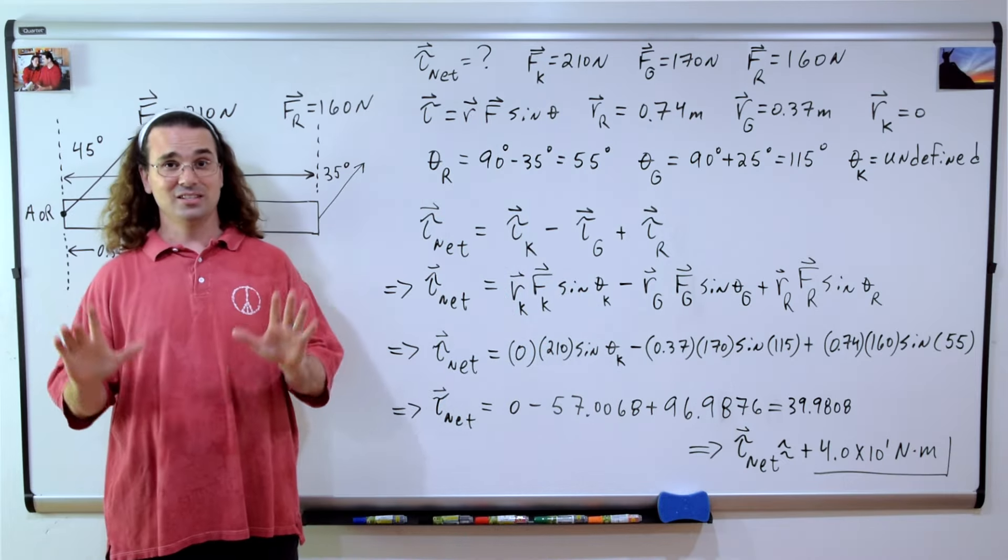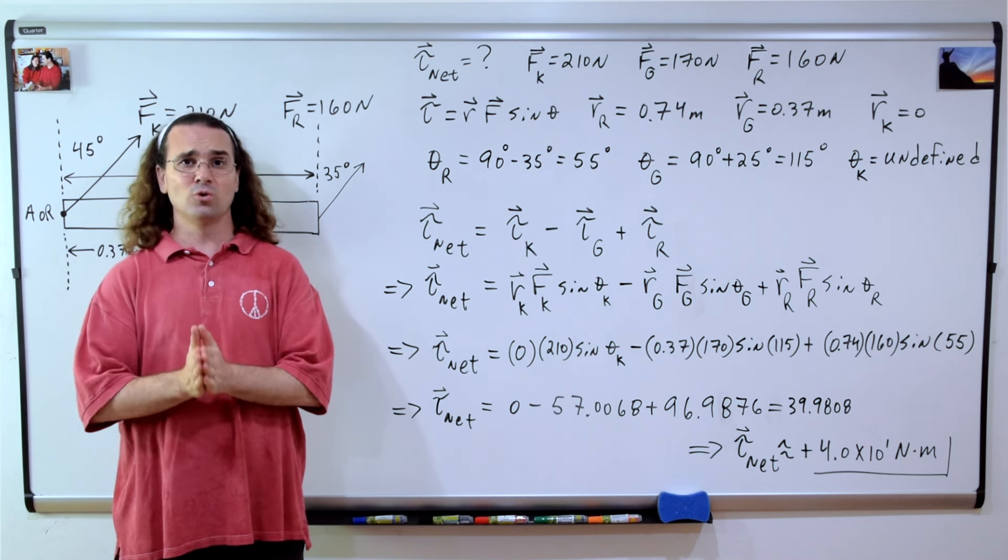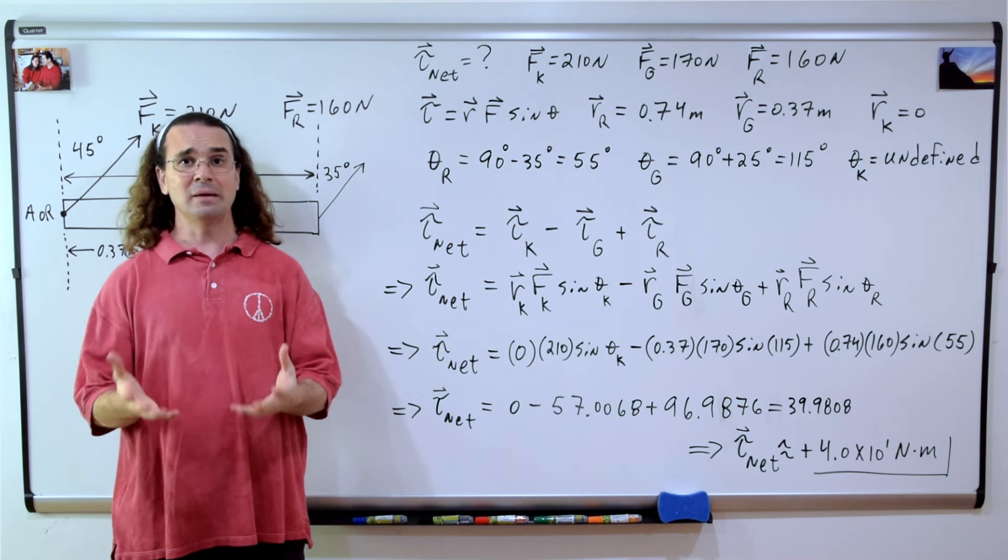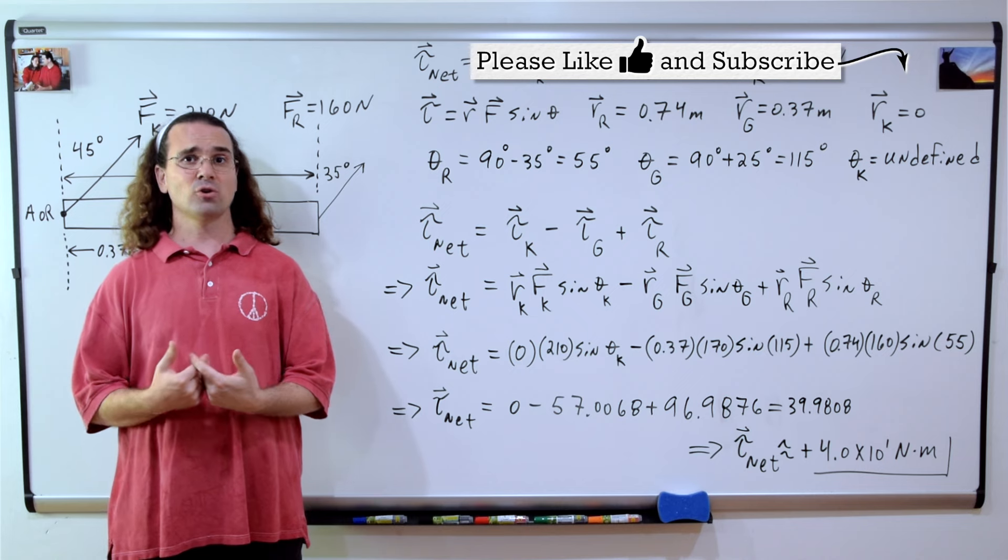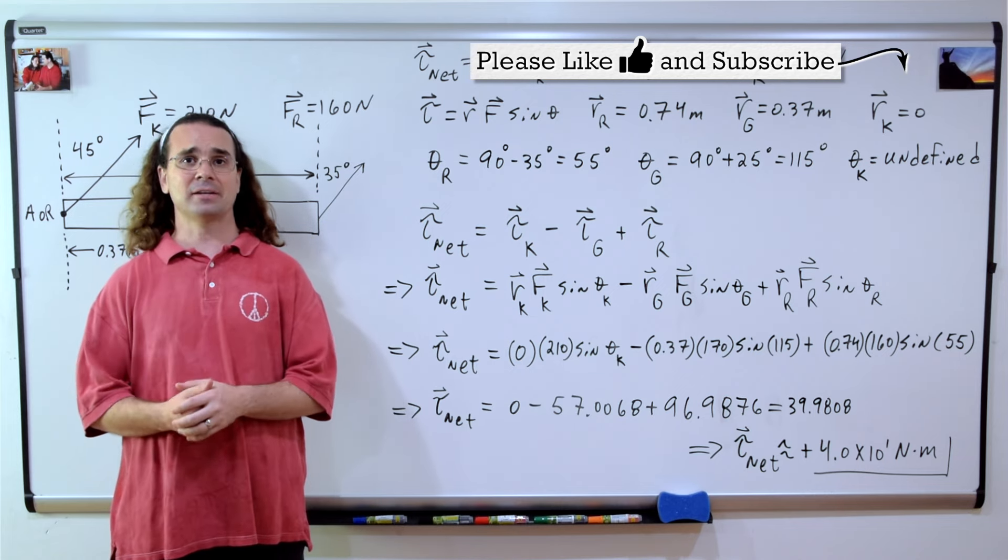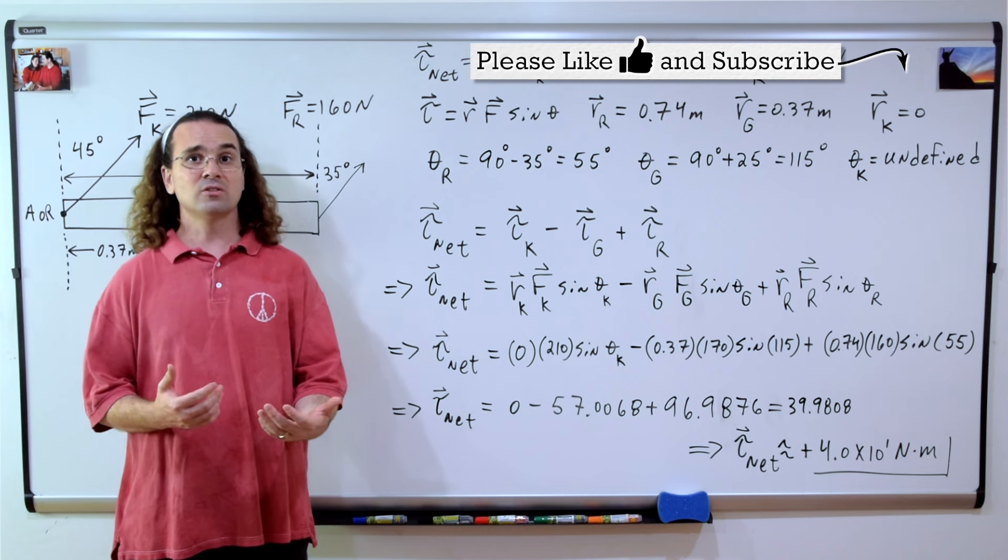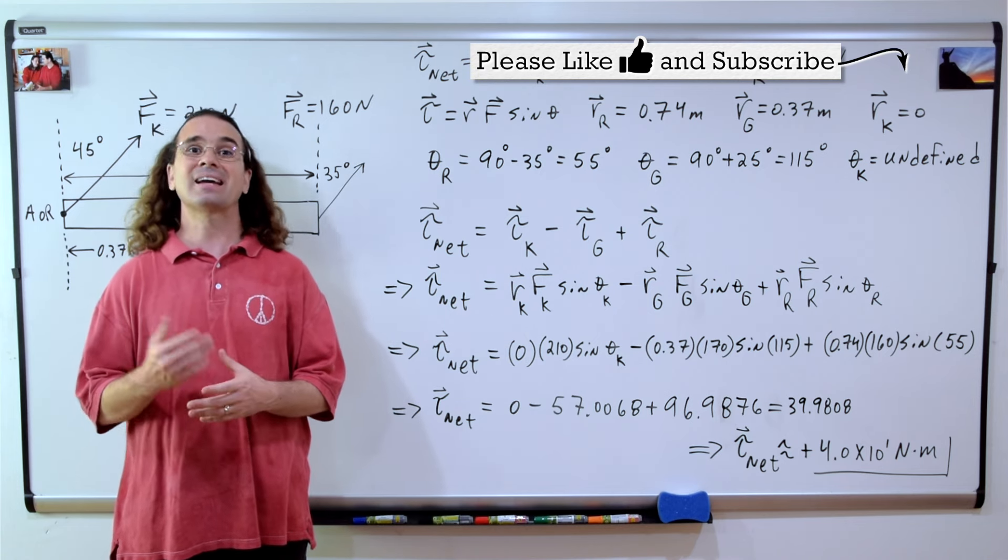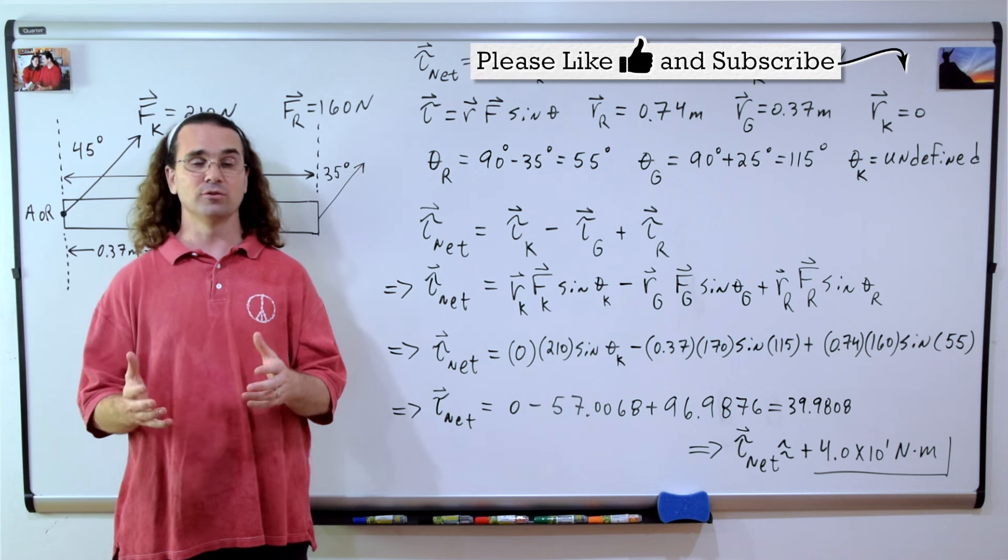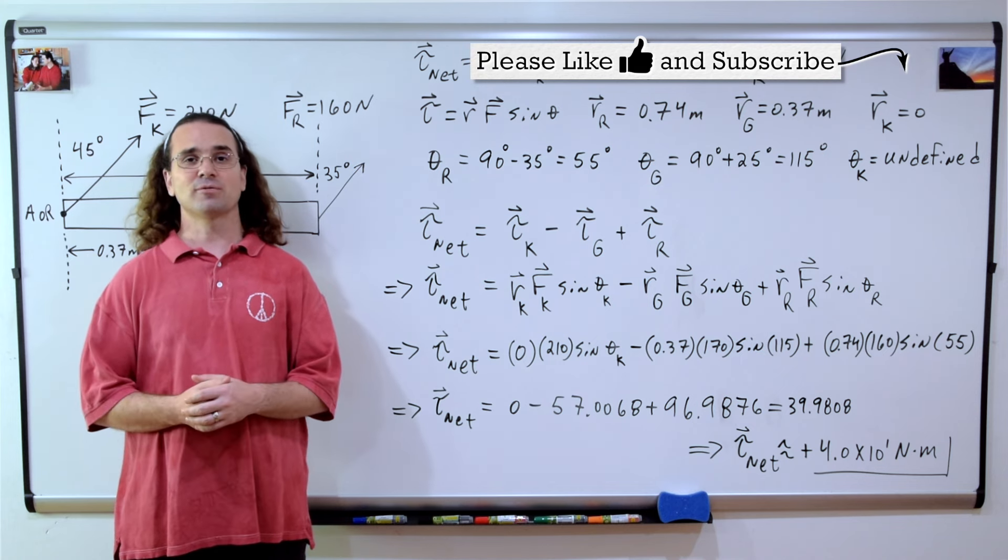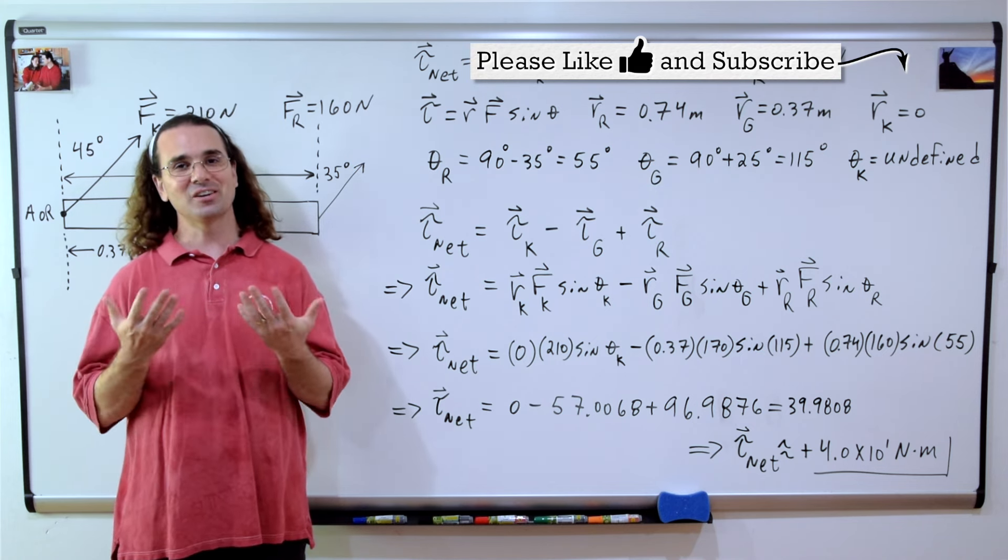That is correct. Please remember, do not be too cool for the right hand rule. Limber up, and include the direction of torque, because torque is a vector. Our answer for net torque is positive, which means the door would angularly accelerate out of the board or counterclockwise from your viewpoint. Thank you very much for learning with me today. I enjoyed learning with you.